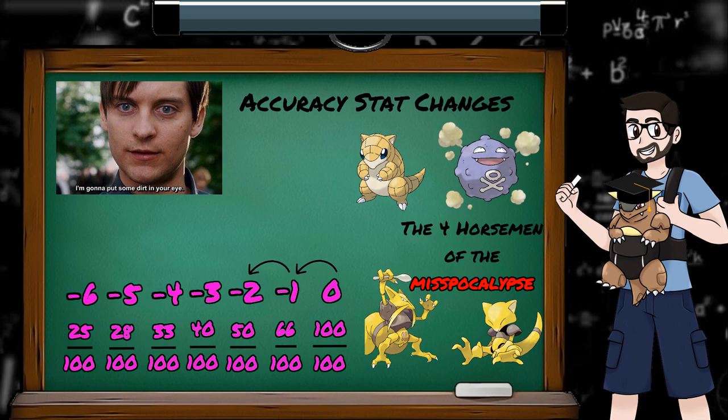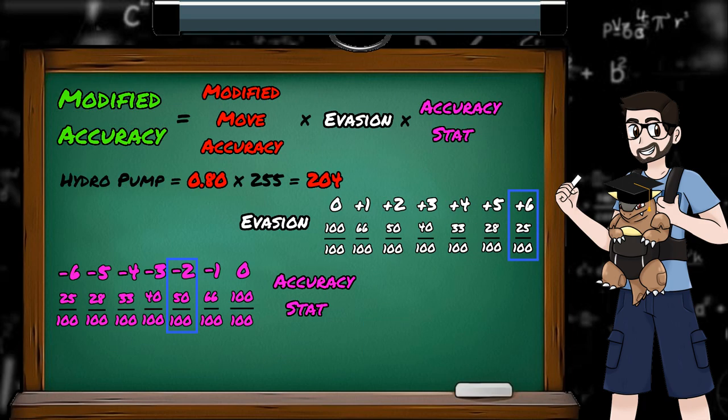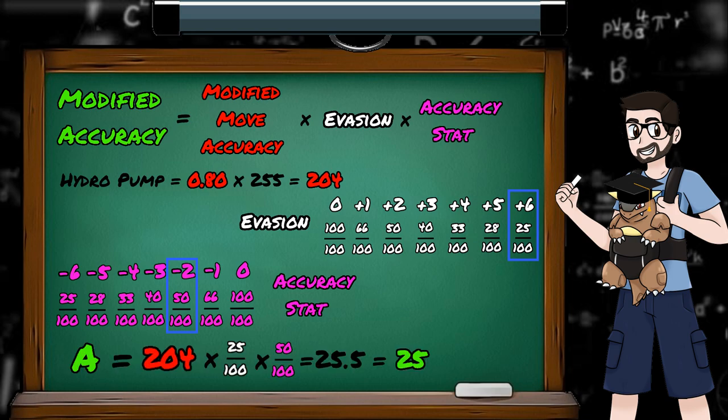Accuracy changes stack with evasion changes. So let's say my Gyarados has been smokescreened twice, and is trying to use Hydro Pump against a Muk that is minimized 6 times. Our accuracy total would be 204 times 25 over 100 times 50 over 100, which is 25.5, rounded down to 25. Giving our Gyarados just under a 10% chance to hit.